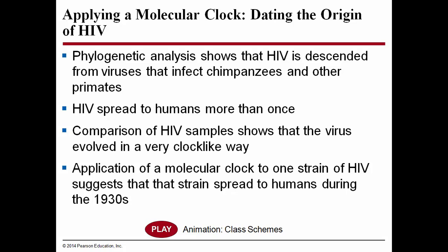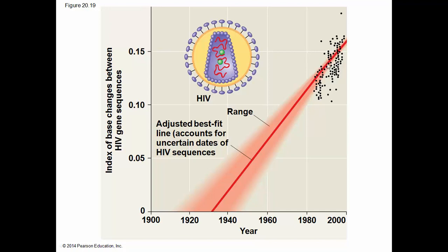Phylogenetic analysis shows that HIV, the virus that causes AIDS, is descended from viruses that infect chimpanzees and other primates. HIV spread to humans more than once. Comparison of HIV samples shows that the virus evolved in a very clock-like way. Application of the molecular clock to one strain of HIV suggests that strain spread to humans as early as the 1930s. Here we look at a scatter plot of the known differences in base pair changes of the HIV gene sequence, extrapolating using a scatter plot to see when the original change occurred.